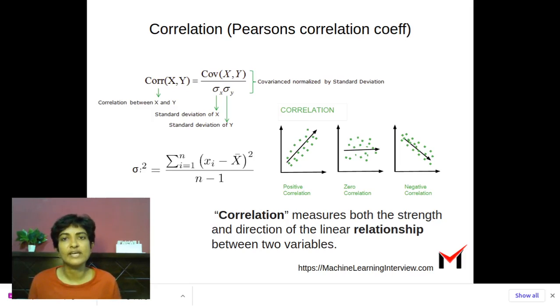So what correlation is doing is effectively scaling or normalizing the covariance by the variances in the individual directions, or the square root of variances in the individual directions.